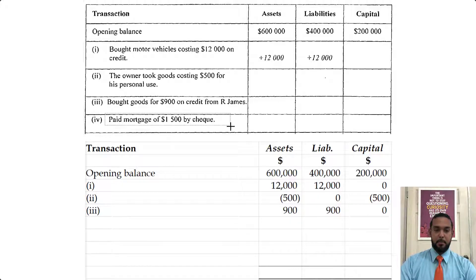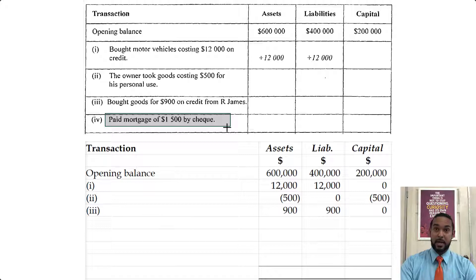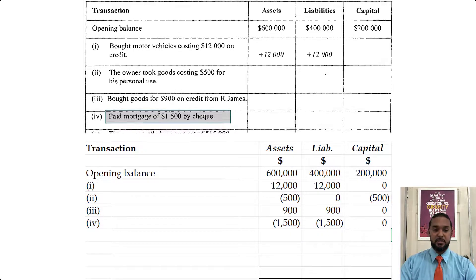Next: paid mortgage 1,500 by check. Your mortgage is a liability. If you pay part of your mortgage you are paying back some of what you owe, which means your liability is going down. It also means you're using up some of your money — money out of your bank because it said check. So assets and liabilities would both be decreasing by 1,500.